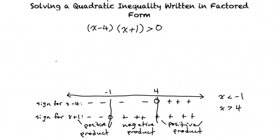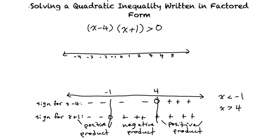How do I actually graph my answer on a number line? To start, we will draw a number line. With our solution x is less than negative 1 and x is greater than 4, we start with x less than negative 1 and shade all values on the number line less than negative 1, drawing an arrow to show it continues.